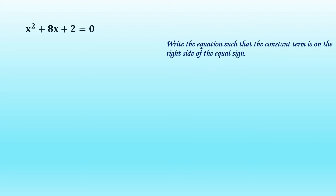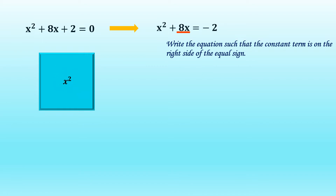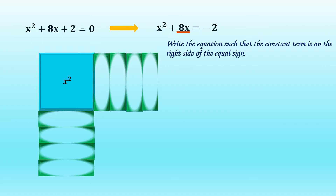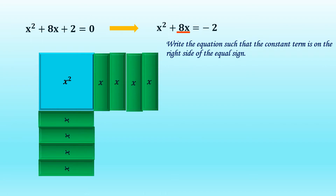Let us solve the first quadratic equation x squared plus 8x plus 2 equal to 0 using algebra tiles. First, we have to write the equation such that the constant term is on the right side of the equal sign. Our equation would become x squared plus 8x equal to negative 2. Rearranging our tiles, we have our large blue tile which represents x squared, 8 green tiles to represent 8x, and 2 red tiles to represent negative 2.